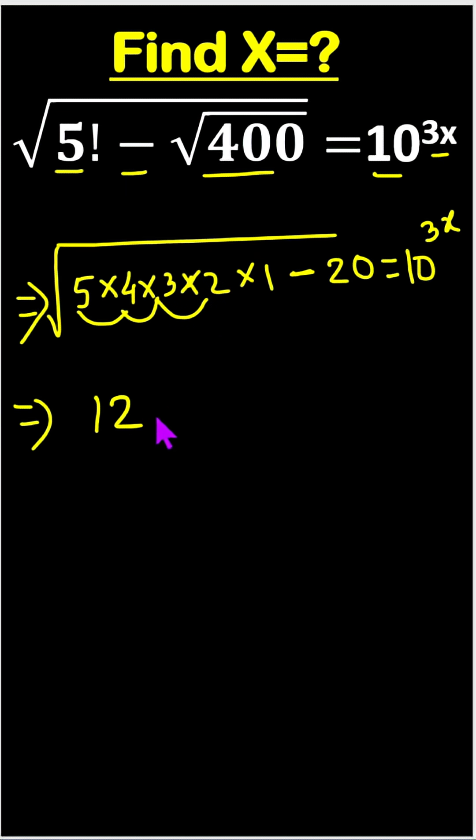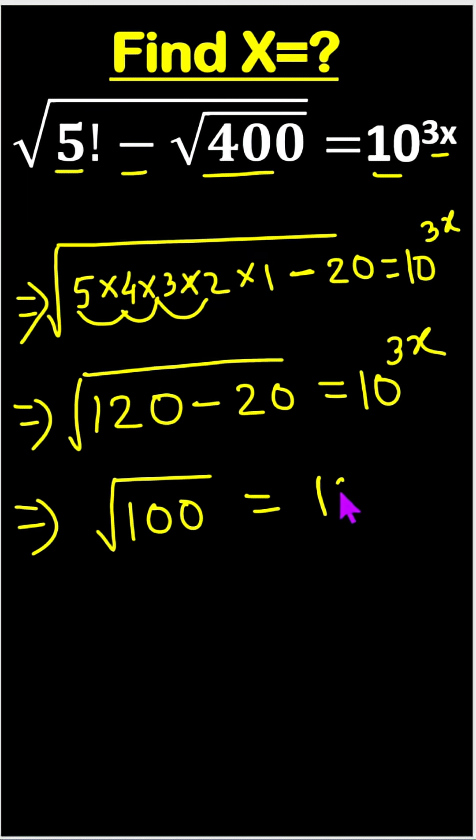So, square root of 120 minus 20 equals 10 to the power 3x. Now, 120 minus 20 is 100. Square root of 100 equals 10 to the power 3x.